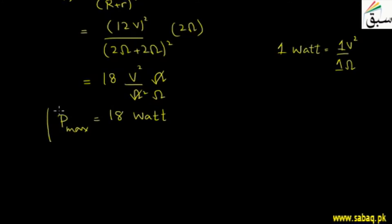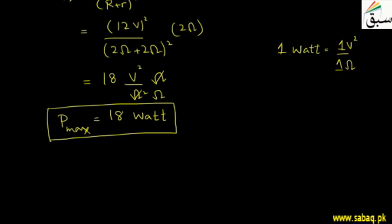Students, we have calculated all three parts. We have calculated the maximum power which the battery can provide to an external resistance. When we connect external devices, the maximum power it can deliver is 18 watts. I hope students that you understood the problem.